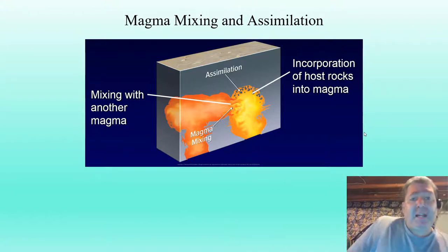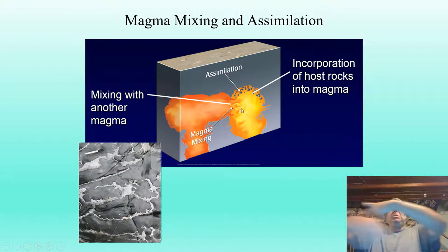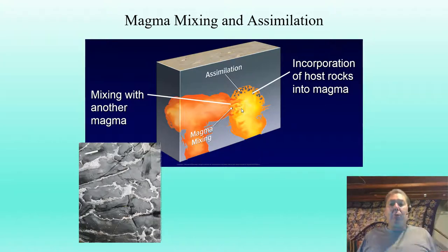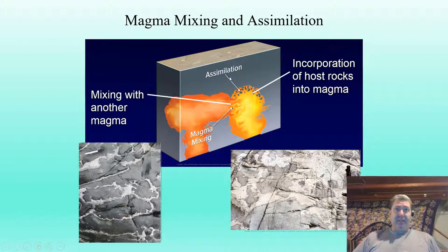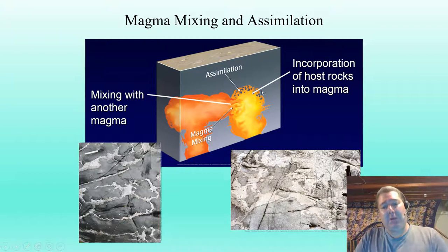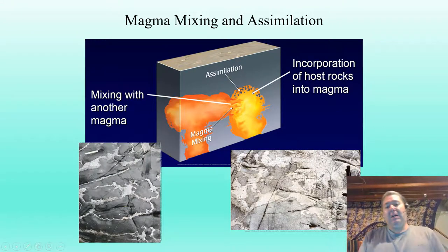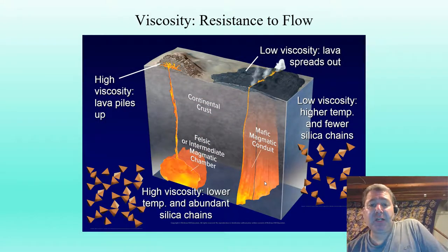Adding even a small amount of water to hot dry rocks will cause them to melt. Some other interesting things can happen with magma: assimilation and mixing. One magma chamber can break into another and they mix together, but they may have different densities so they might not mix very well. We can also have what are called xenoliths — incorporation of the host rock. As the magma intrudes, the surrounding rock heats up, some of it melts and falls into the magma chamber, adding to the chemistry of that magma.